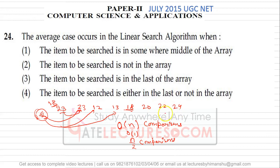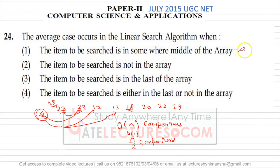According to linear search, we compare the element with each and every element. Looking at the options: if the item to be searched is somewhere in the middle of the array, then this is the average case.